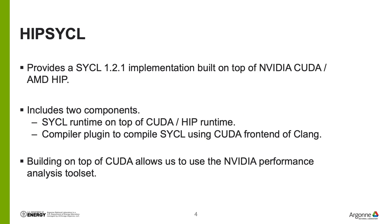HIP-SYCL provides a SYCL 1.2.1 implementation built on top of NVIDIA's CUDA and AMD's HIP. It includes two major components: a SYCL runtime that runs on top of the CUDA and HIP runtimes, and a compiler plugin to compile SYCL using the CUDA frontend of Clang. Building on top of CUDA provides the benefit of being able to use the NVIDIA Performance Analysis Toolkit in our study.